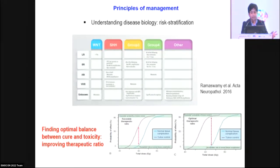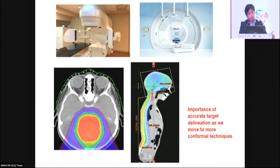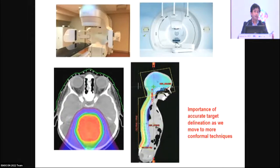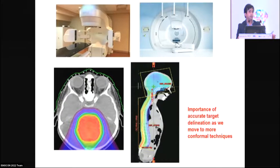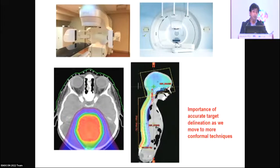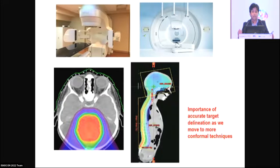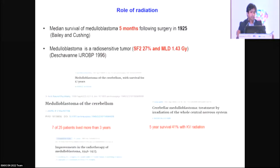We have seen major developments in technology: from simple 2D radiation, to IMRT using modern linear accelerators with image guidance, and now proton therapy — Dr. Jalali has developed a proton center and we are excited to get one in our center soon. This has helped minimize dose to normal tissues. However, as we move toward higher conformal techniques it becomes critical to precisely define targets — where to deliver radiation and what to spare.